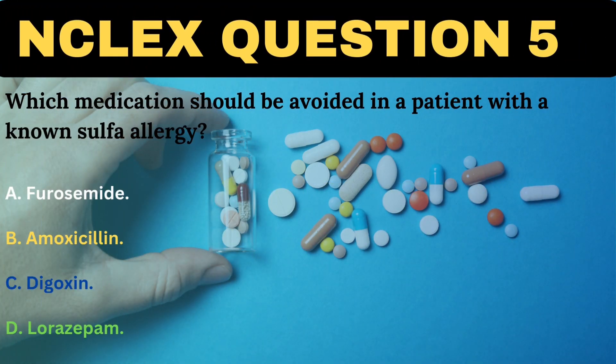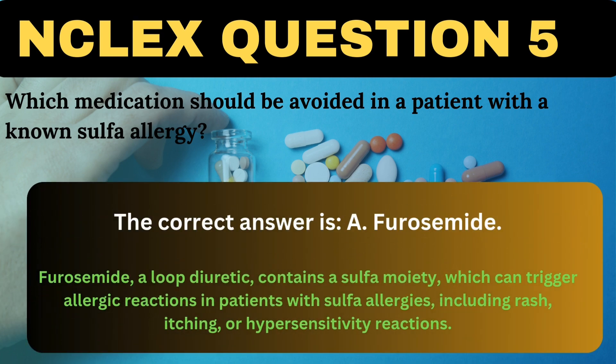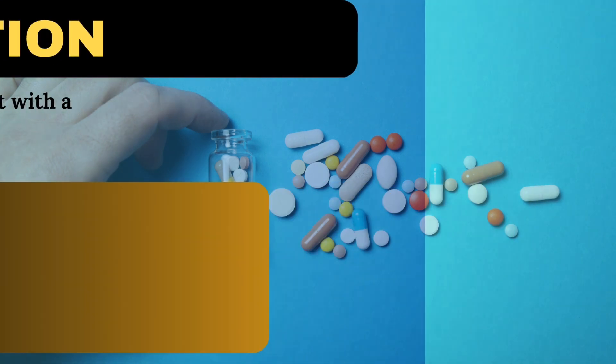Which medication should be avoided in a patient with a known sulfa allergy? A. Furosemide. B. Amoxicillin. C. Digoxin. D. Lorazepam. The correct answer is A, Furosemide. Furosemide, a loop diuretic, contains a sulfa moiety which can trigger allergic reactions in patients with sulfa allergies, including rash, itching, or hypersensitivity reactions.